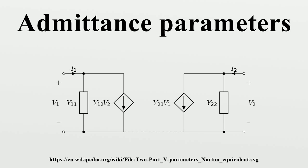In the special case of a two-port network with the same characteristic admittance at each port, the above expressions reduce accordingly. Note that the value of the determinant can become zero for specific values, so the division involved in the calculations may lead to a division by zero. The two-port S-parameters may also be obtained from the equivalent two-port Y-parameters by means of specific expressions, wherein the characteristic impedance at each port is used.